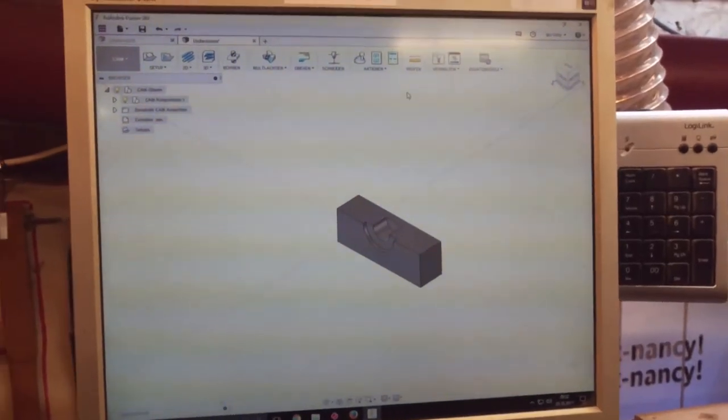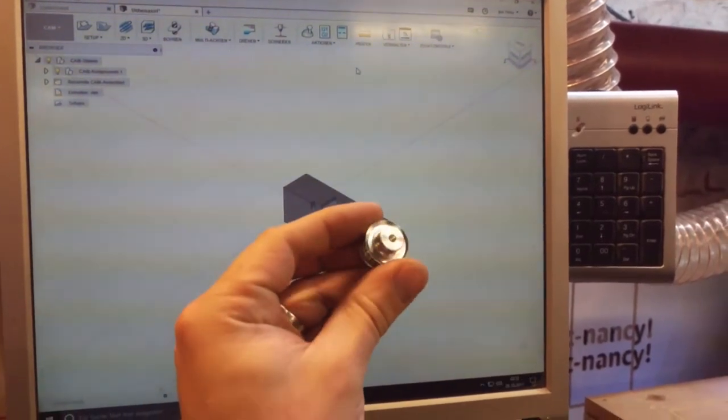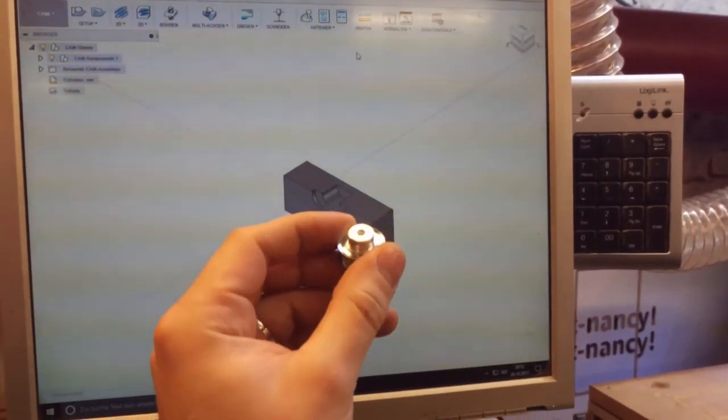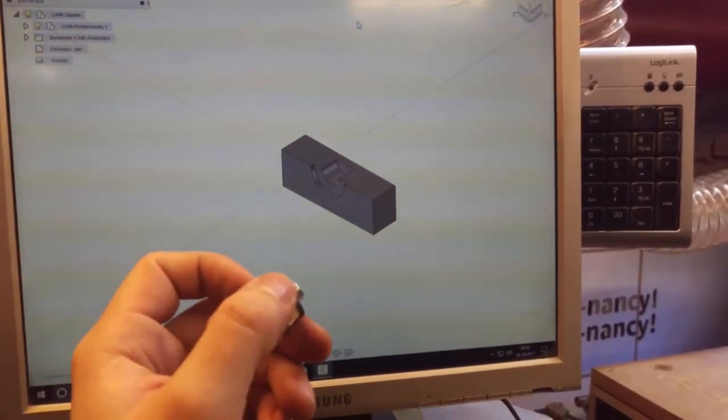I used Fusion 360 to create a very basic mount for this timing belt pulley. I need to mount it so I can drill out the hole in the middle precisely. Two of these will clamp down on this part of the pulley and fix it for the drill press.